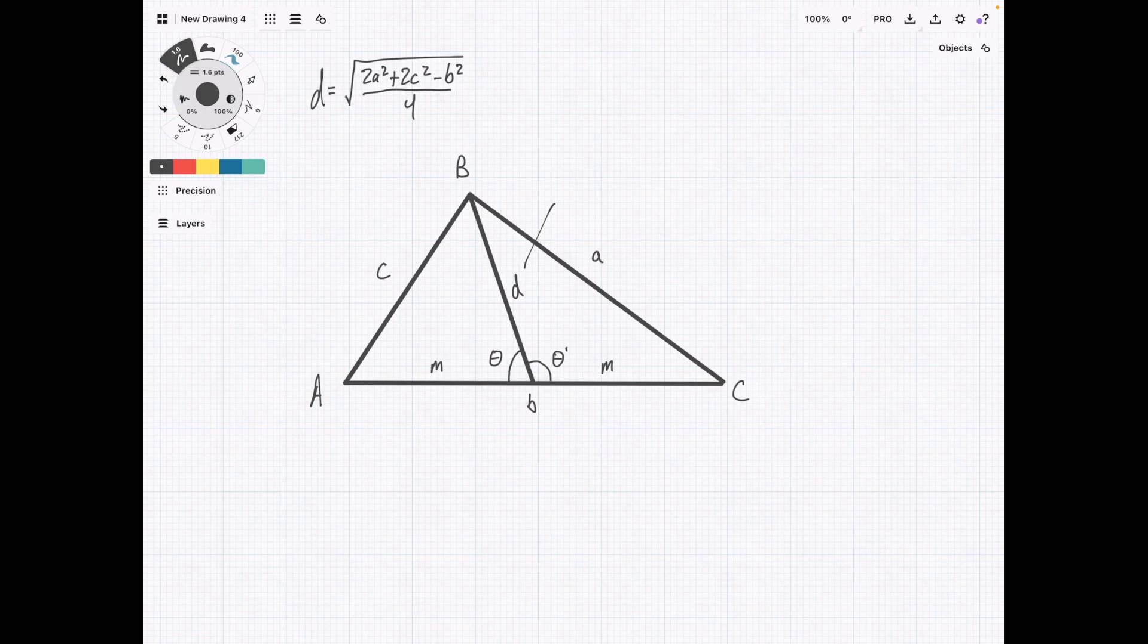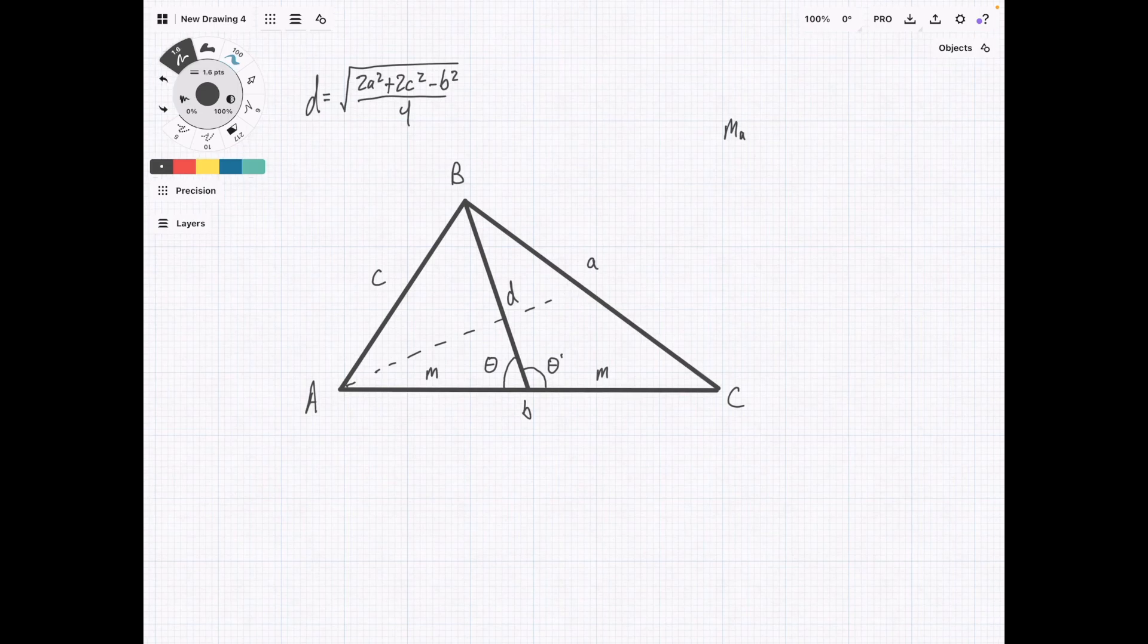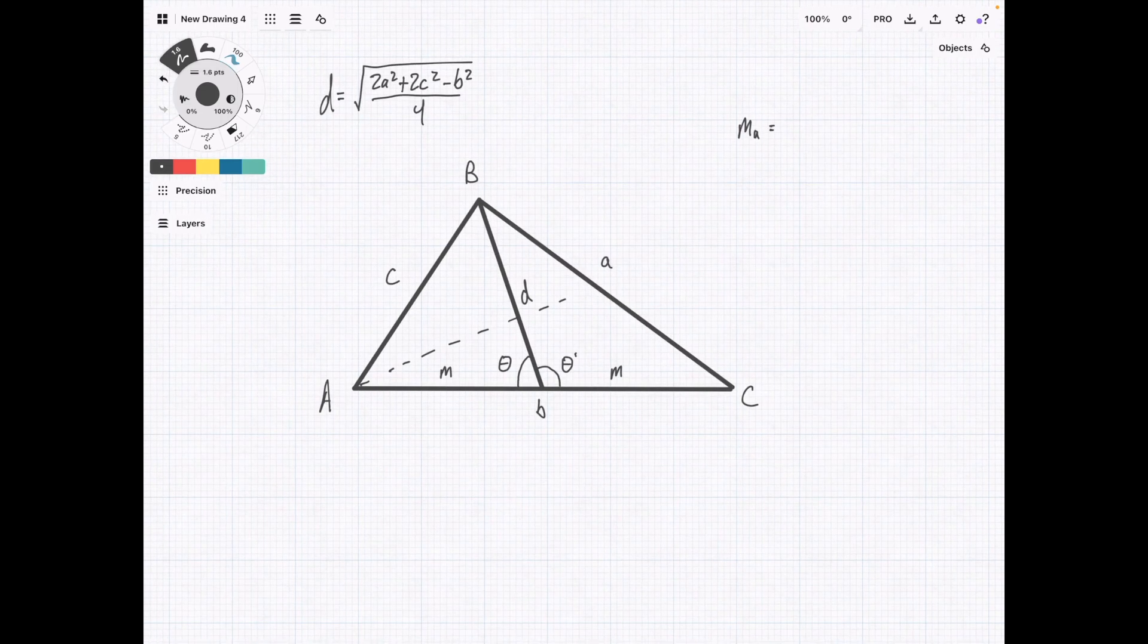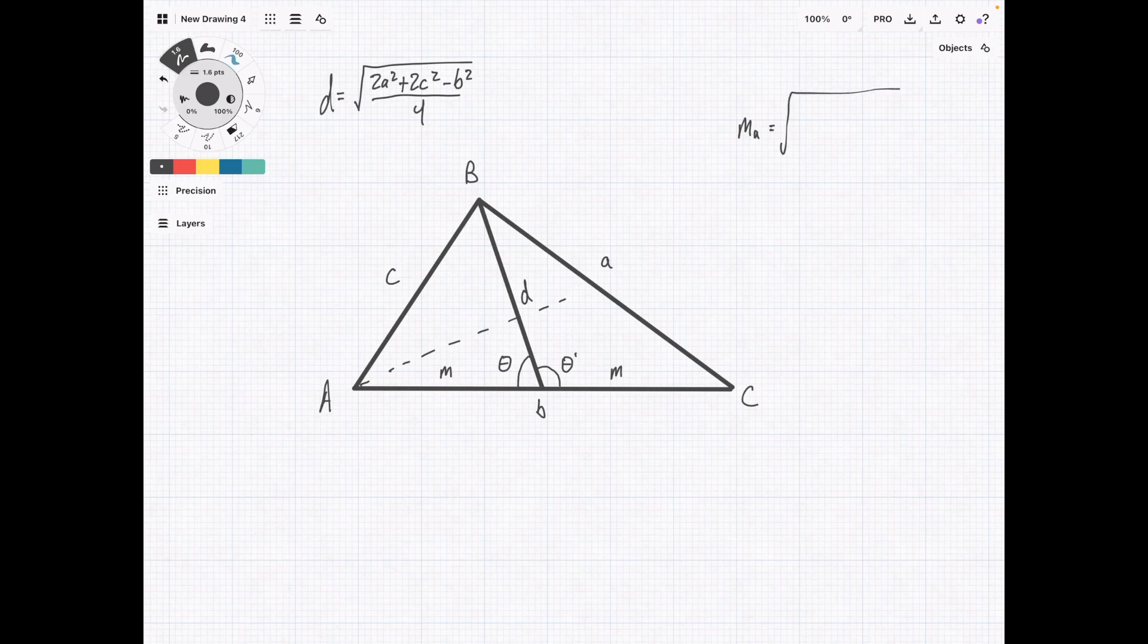But the theorem can be more generalized so that it can work for any side. So, for example, if we were finding the median from side a like this, then the formula is going to be ma equals the square root of 2b squared plus 2c squared minus a squared over 4. mb, which is actually the one we found, is going to be square root of 2a squared plus 2c squared minus b squared over 4. So that checks out here.